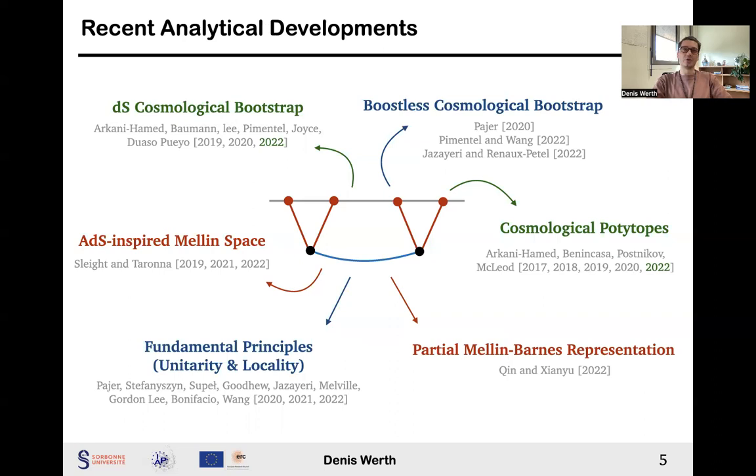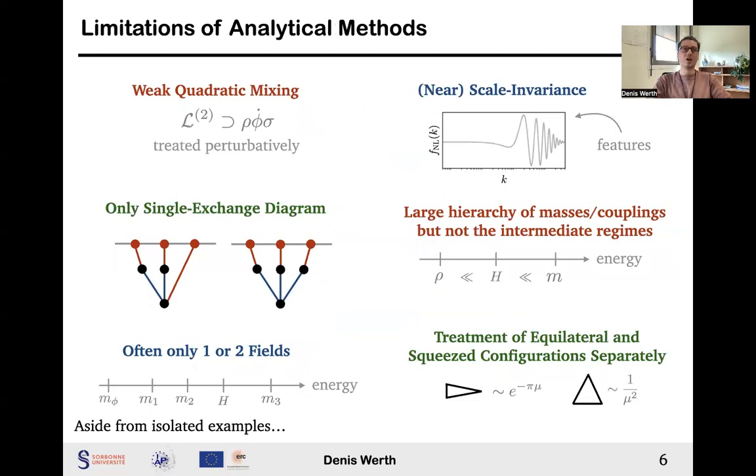As we have just seen, primordial correlators are notoriously difficult to compute. And yet, powerful analytical tools have been developed in the past few years. Without entering into the details, I will just mention a few of them. One of them is the development of the decilio-cosmological bootstrap, which was then improved to include boost-breaking interactions and the speed of sound for the inflating fluctuations. I can also mention other techniques to be able to analytically compute inflationary correlators, for example, going to Mellon space or using partial Mellon-Barnes representations. Although these analytical methods are interesting, they are at the moment quite limited.